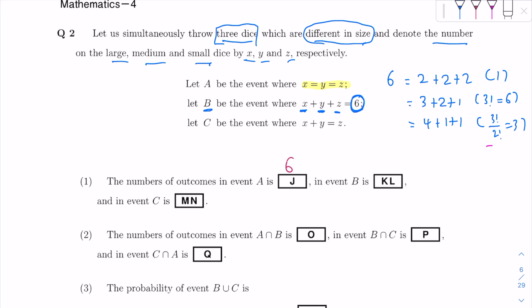So the answer for the number of possibilities for event B is 1 plus 6 plus 3. The answer for KL is 10.